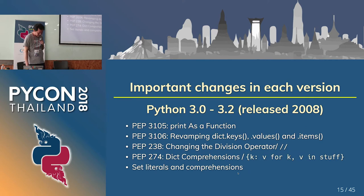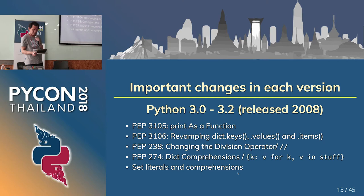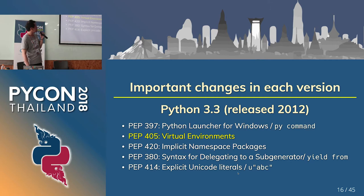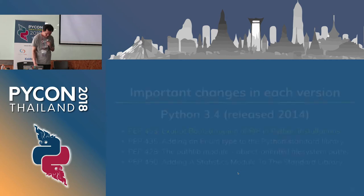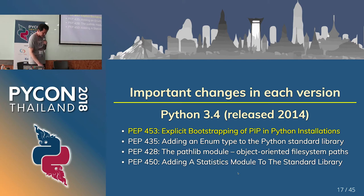Python 2.7, released in 2010, was a maintenance release and backported features only from Python 3. Python 3.0 to 3.2 were the first releases of Python 3 — they had big changes, but I don't think those versions were very usable. Python 3.3, released in 2012, includes the virtual environment library. Python 3.4, released in 2014, was a stable enough release for Python 3 — it includes pip.